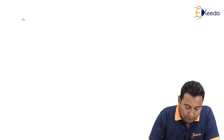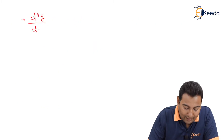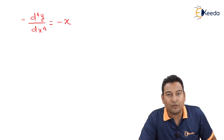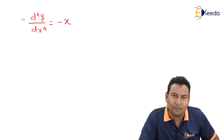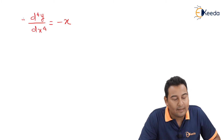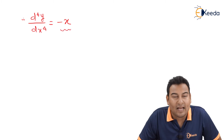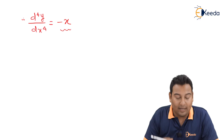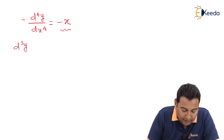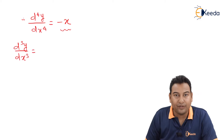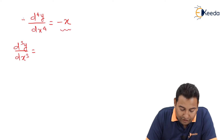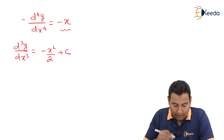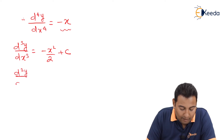Dividing through, d⁴y/dx⁴ is equal to x. We are left with only x, so it has to be solved by integration - not complementary function plus particular integral, because there is no y term. Therefore I need to integrate four times. Integrating once I get d³y/dx³; the three derivatives reduce by one. Integration of x gives minus x²/2 plus C.